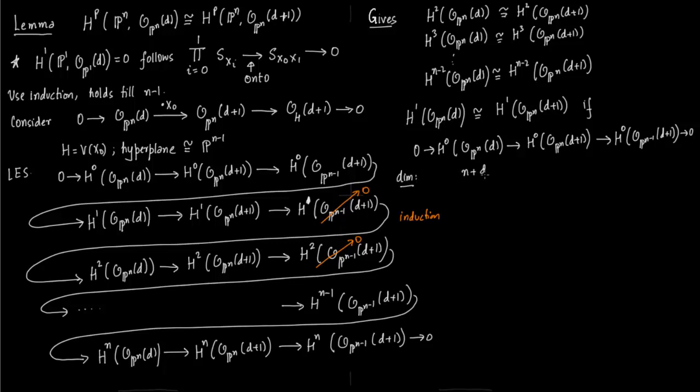This holds because of dimension. Notice that dimension here of H^p, H^0(O_P^N(d)) is (n+d) choose n. Here it is (n-1, d+1) choose (n-1), 1, 1 cancels out. And here it is (n+d+1) choose n. So you add this and this, it equals to, so you add this it equals to this. So by dimension counting the sequence has to be an exact sequence. So the sequence holds and we have shown the result is true for H^1.